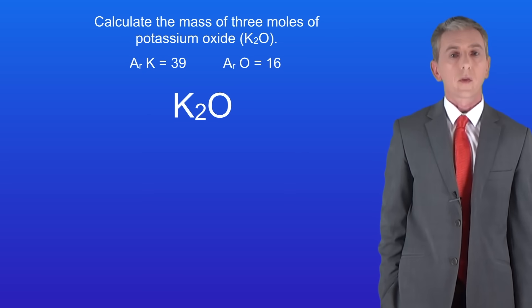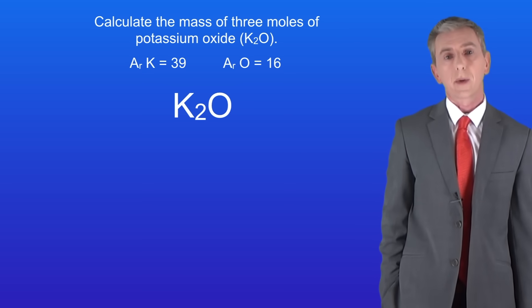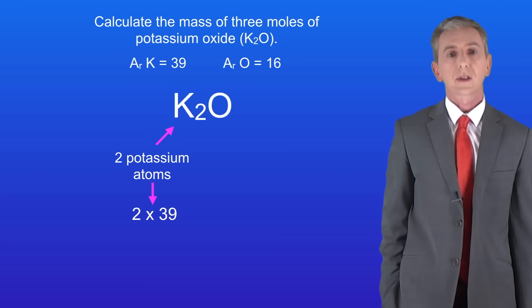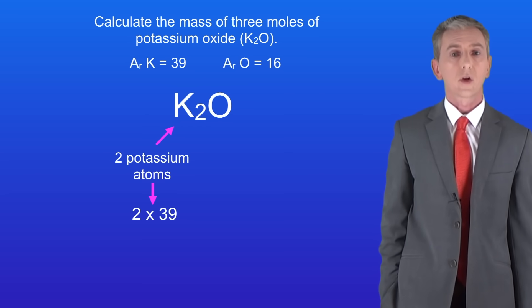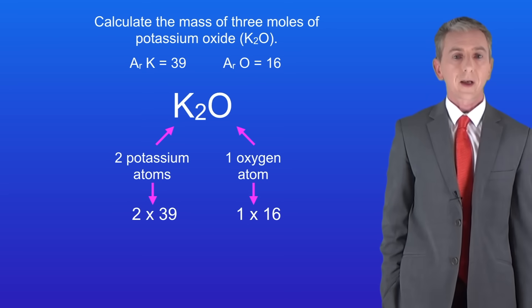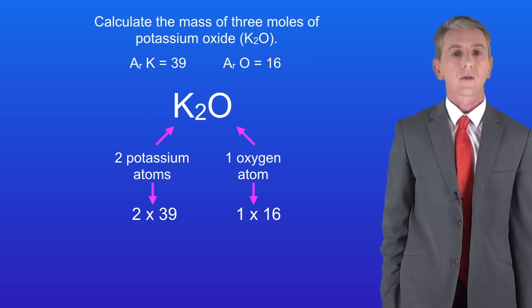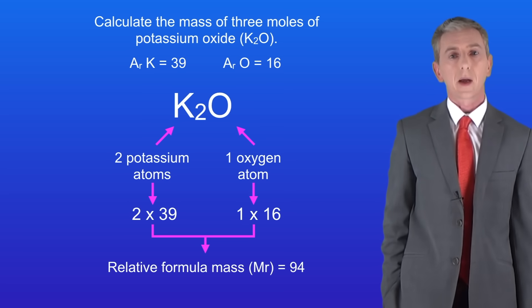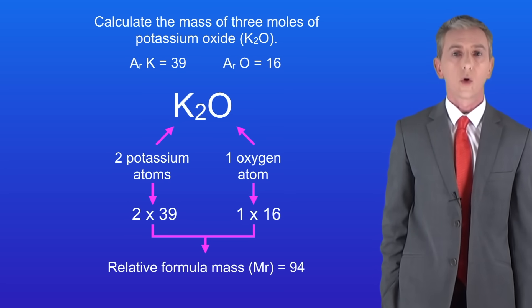First we need to work out the relative formula mass for potassium oxide. We've got two atoms of potassium and potassium has a relative atomic mass of 39. We've got one atom of oxygen and oxygen has a relative atomic mass of 16. Adding these together gives us a relative formula mass of 94.